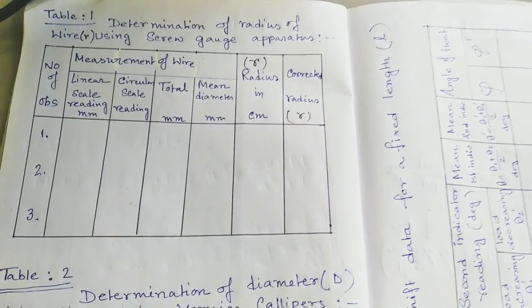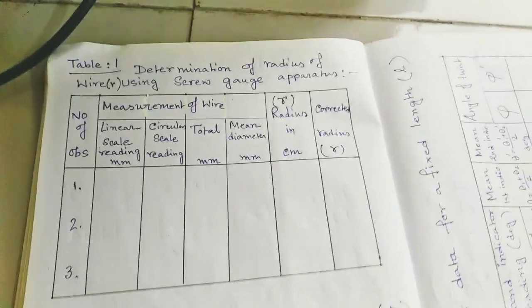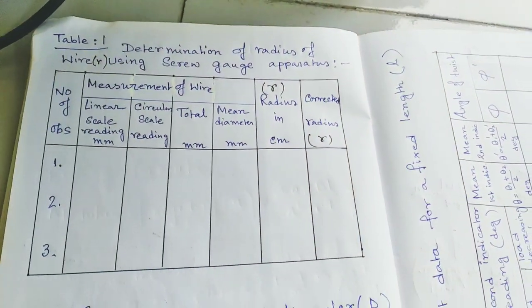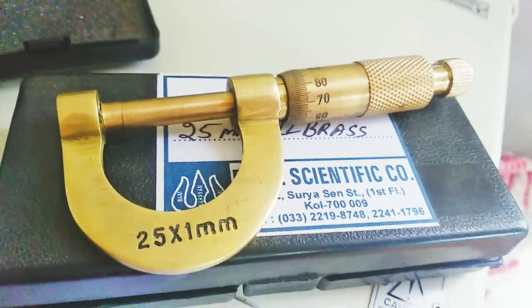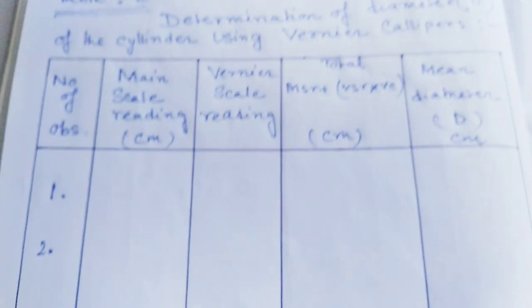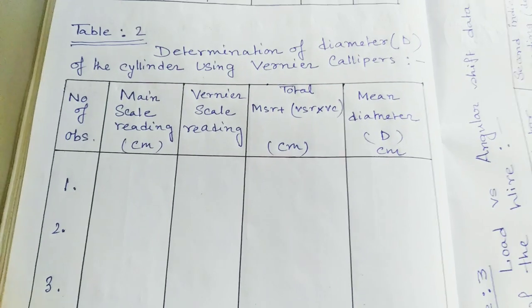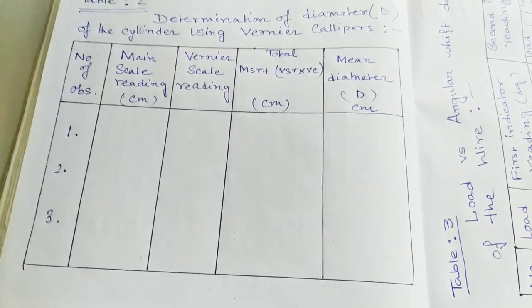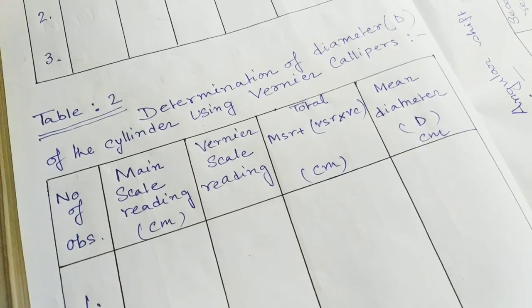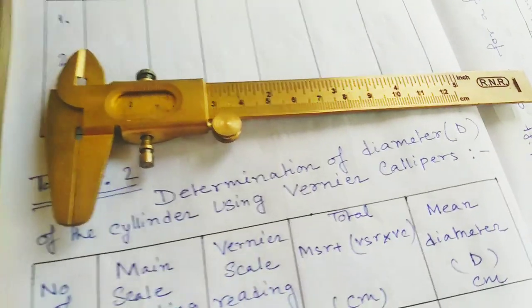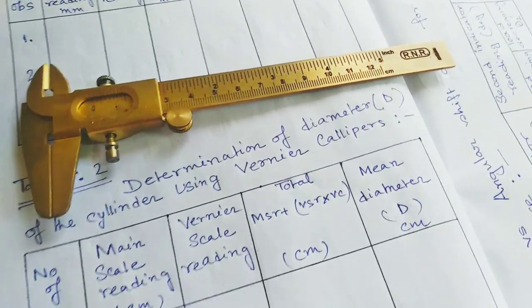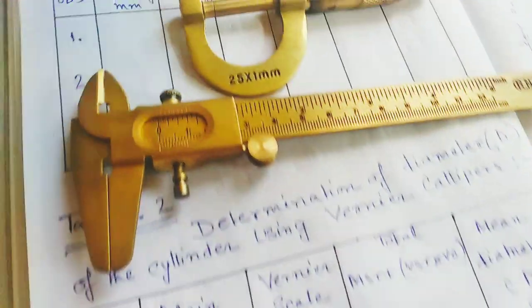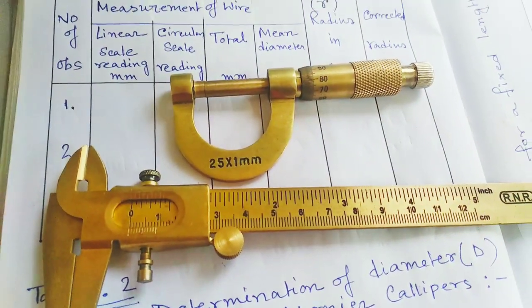These are our working tables. Table number one is determination of radius of the wire using screw gauge — this is our screw gauge. Table number two is determination of diameter of the cylinder using vernier calipers. This is the vernier calipers we are going to use. I have taken zero error for both apparatus.